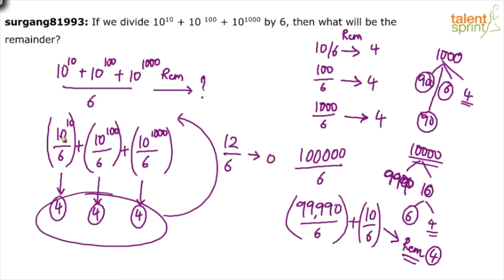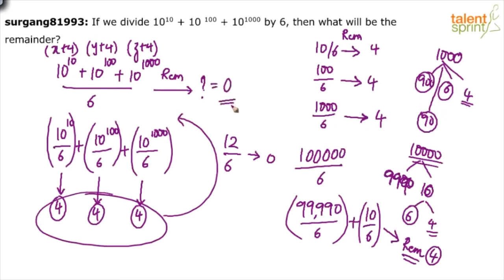You can think of it as: 10^10 = x + 4, 10^100 = y + 4, and 10^1000 = z + 4, where x, y, z are each divisible by 6. Then 4 + 4 + 4 = 12 is also divisible by 6. So the overall remainder is 0 — the complete numerator is divisible by 6. The remainder when you divide this expression by 6 is 0.